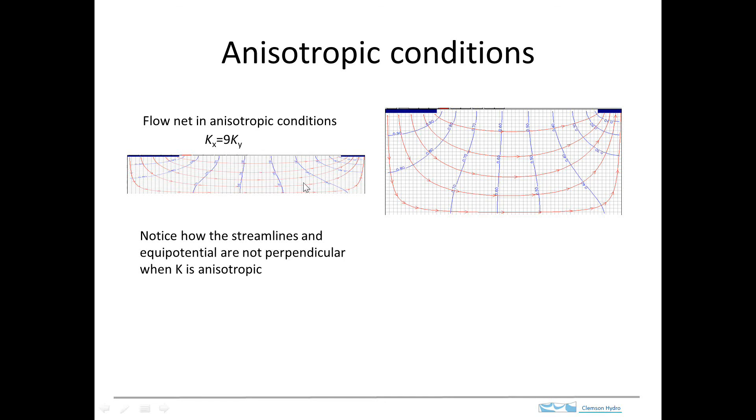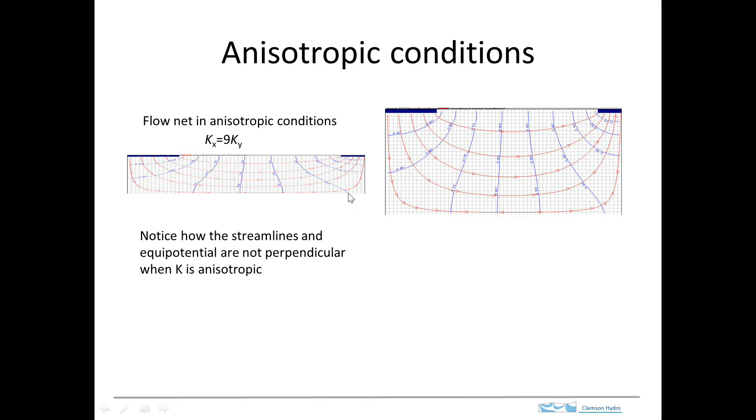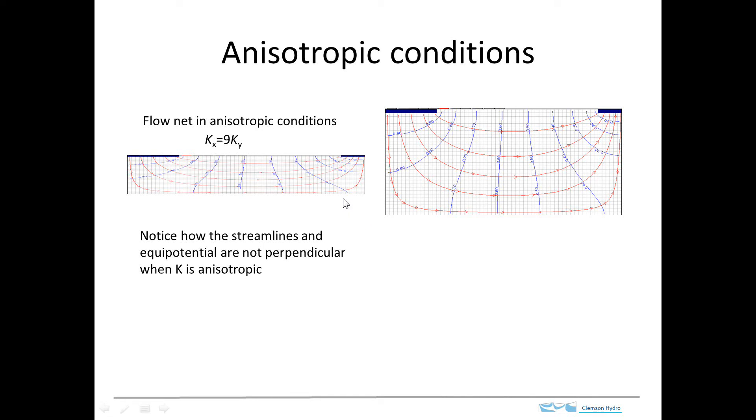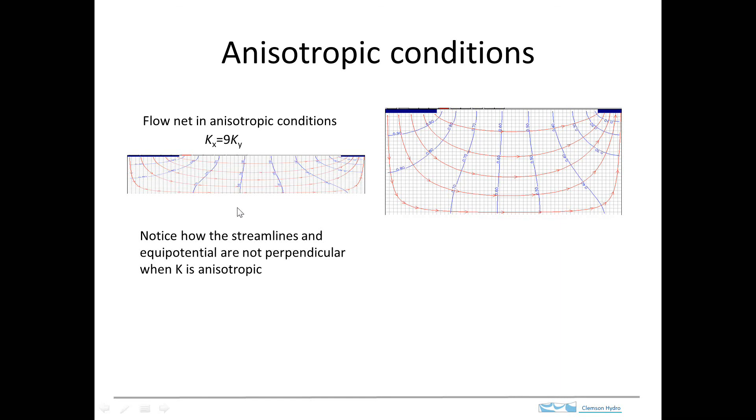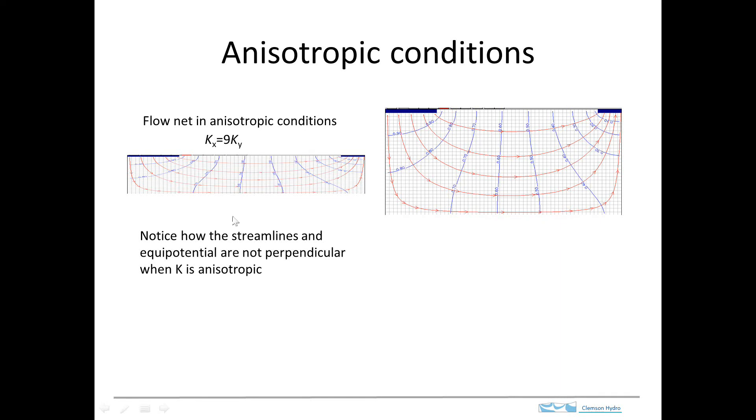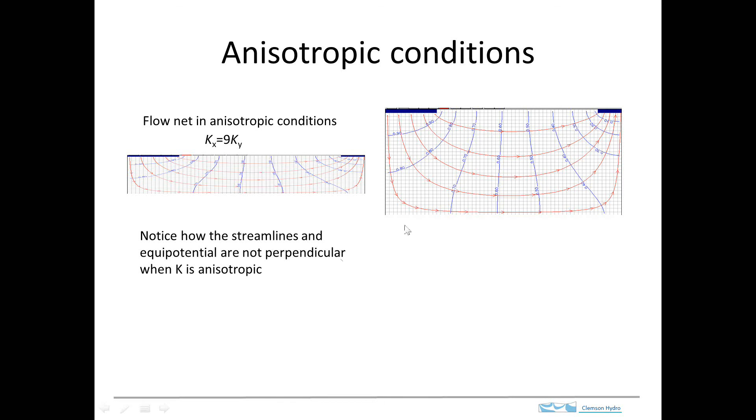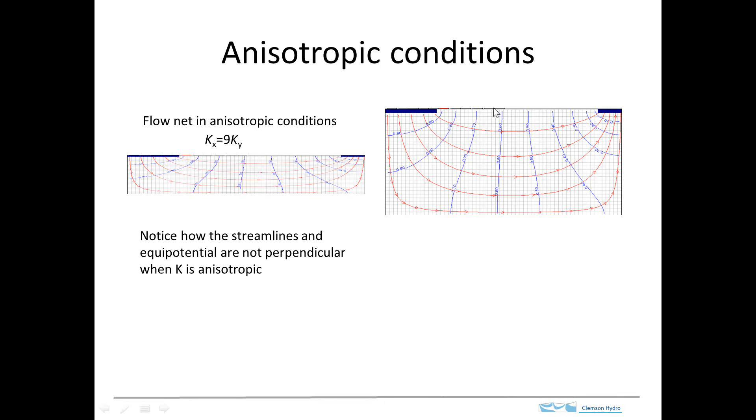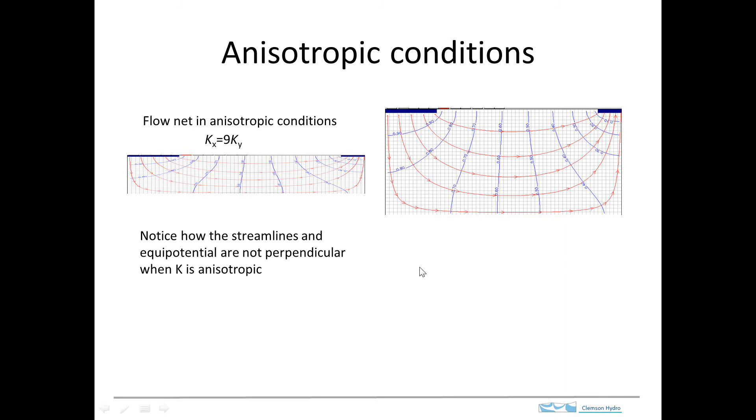And here's why. Because if it's anisotropic, then the equipotentials or the head contours and the flow lines aren't necessarily perpendicular. So keep that in mind. Again, that's a favorite question for tests about the conditions that are required for equipotentials and streamlines to be perpendicular.